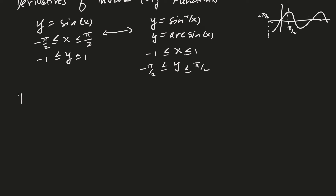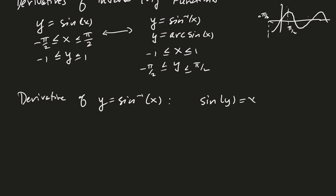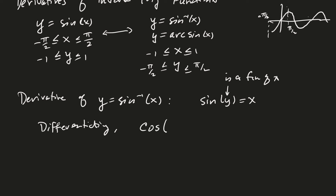To find the derivative of the inverse sine, I rewrite it as sine(y) = x, where y is a function of x. Differentiating implicitly gives cosine(y) times dy/dx — by the chain rule — equals 1. So dy/dx equals 1 over cosine(y).